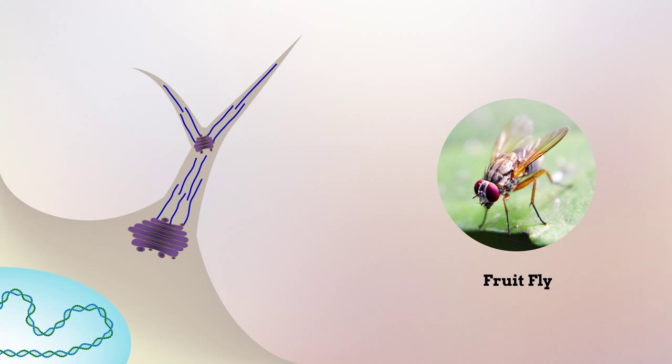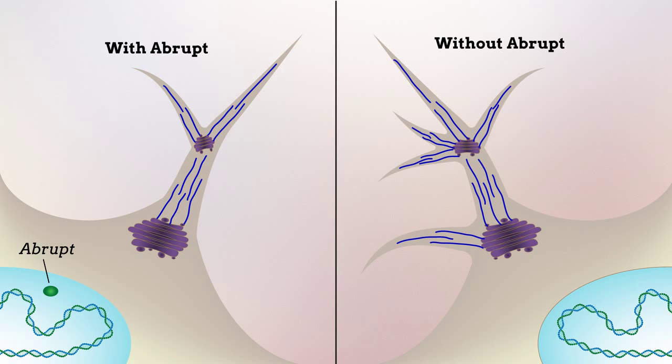In searching for factors that might affect the formation of dendrite-stabilizing microtubules, they found that the transcription factor abrupt restricts dendritic branching by changing the arrangement of microtubules.